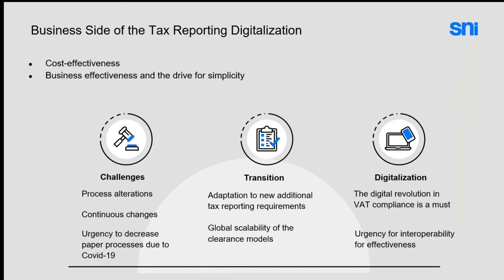Once the tax authorities receive an e-invoice through a clearance or pre-clearance system, the data defines not just VAT but also the top line of sales and profit and loss for a multinational company. Tax authorities can immediately use that data point to assess taxable income for corporate income tax purposes. This is where collection of data blurs the lines between VAT, customs, corporate income tax, and transfer pricing — digitalization covers more than just the VAT scene.